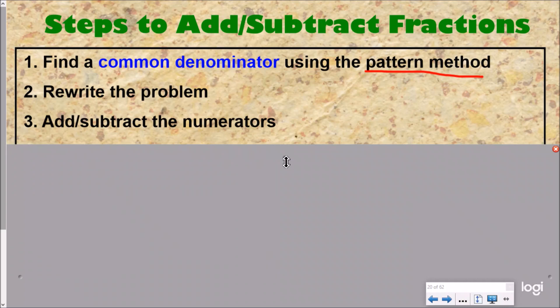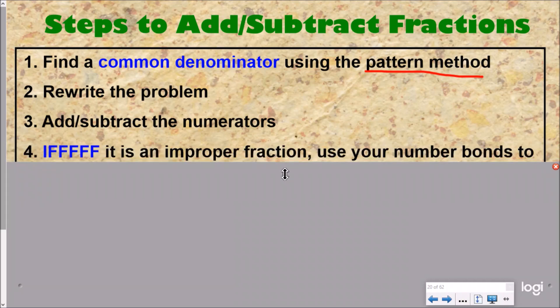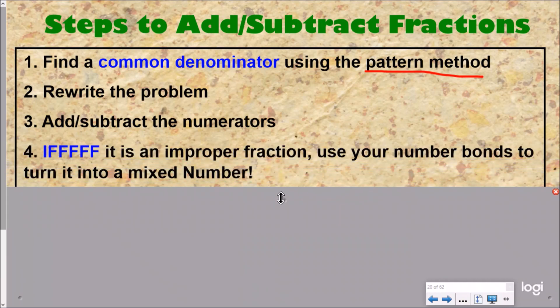Now number four is of the utmost importance. If your answer is an improper fraction, you use your number bonds to turn it into a mixed number. So if it is an improper fraction, use your number bonds to turn it into a mixed number.